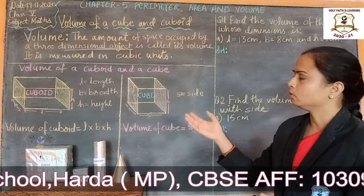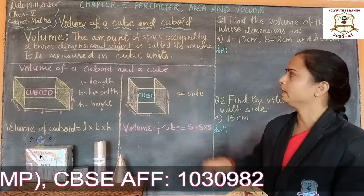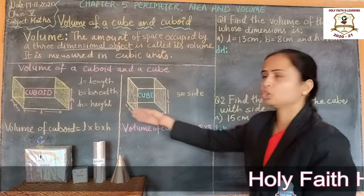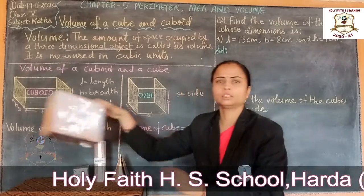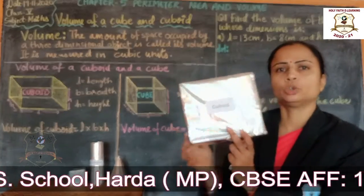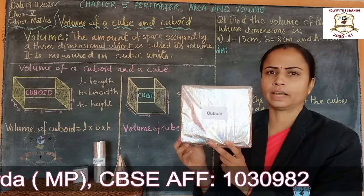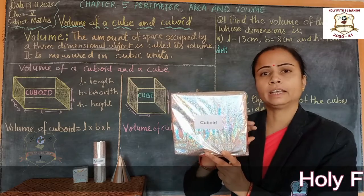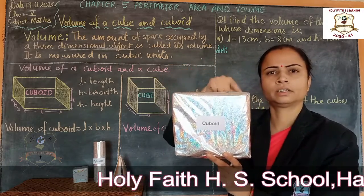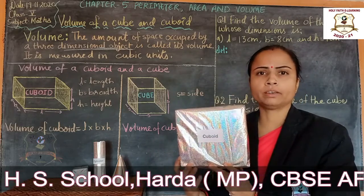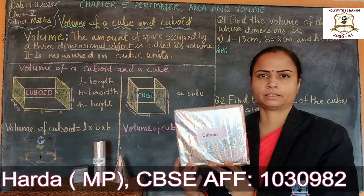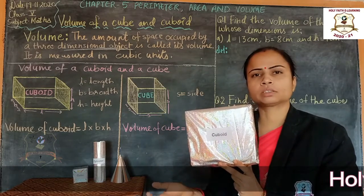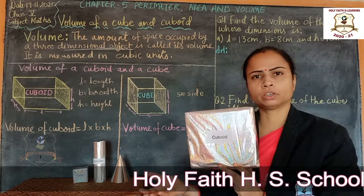Now we will find out the volume of a cuboid and a cube. First, cuboid. This is a cuboid. A cuboid has six rectangular faces — one, two, three, four, five, six. It has eight vertices and twelve edges. Some examples of cuboids are matchbox, bricks, lunchbox, etc.